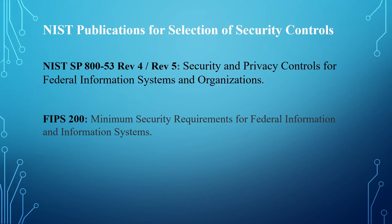Also regarding the control families: NIST 800-53 Rev 4 has 18 control families, while NIST 800-53 Rev 5 increased to 20 control families — two new control families were added. These are the PT control, which is PII Processing and Transparency, and the SR control, which is Supply Chain Risk Management.